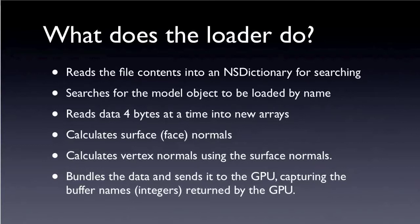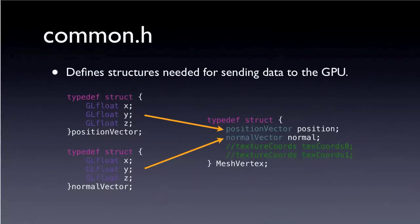Let's take a look at Common.h. It defines structures needed for sending data to the GPU. This is the map for how the data is bundled up and sent over to the GPU. There are several structures like this position vector and normal vector, and they all feed into this mesh vertex, which is ultimately what gets sent over to the GPU. In my loader, I've commented out texture coordinates 0 and 1 — those are going to be added later.